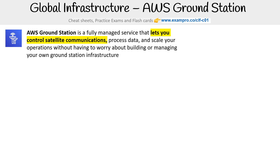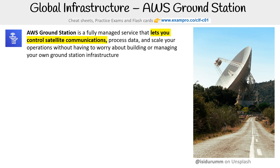When we're talking about Ground Station, a really good way to cement what the service is, is to just think of a big antenna dish that's pointing into the sky trying to communicate with satellites, because that's essentially what the service is doing.